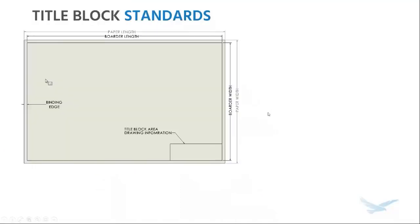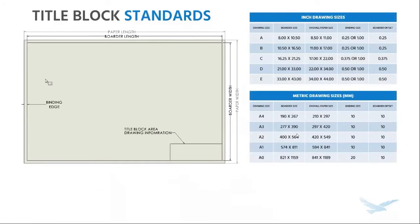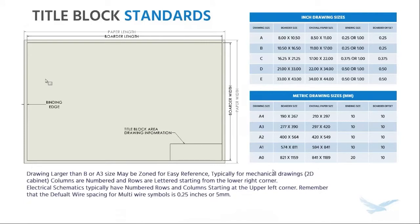One of the things I want to talk about first with title blocks goes back to the standard — back to the days when we actually did paper drawings on old drafting machines. We had the binding edge on the left-hand side, the paper space, and the border offset from that paper size. The title block drawing information was in the lower left-hand corner, because when you folded up these larger sizes to store them, you needed the title block information visible right away without having to unfold everything. There is standardized sizing for inch and metric drawings with border offsets.